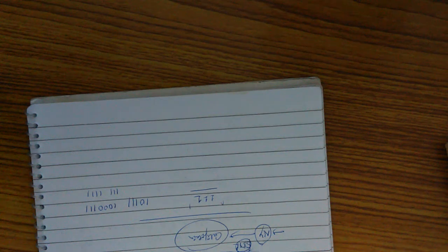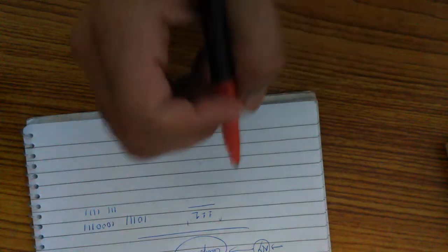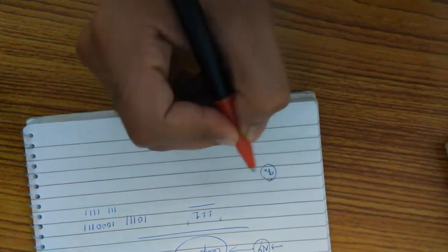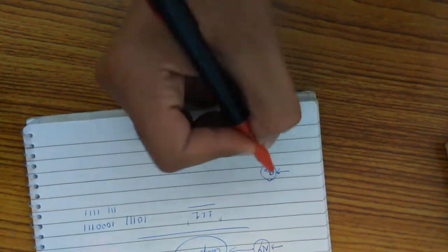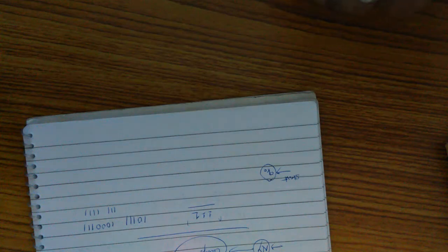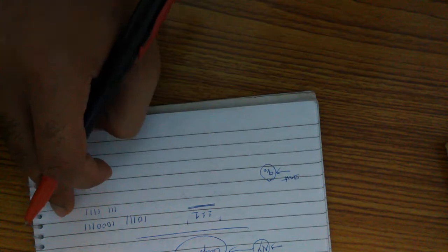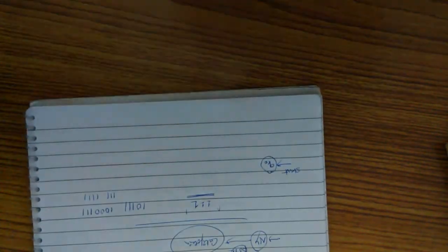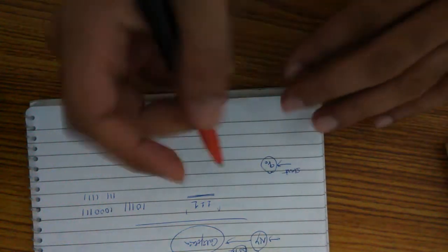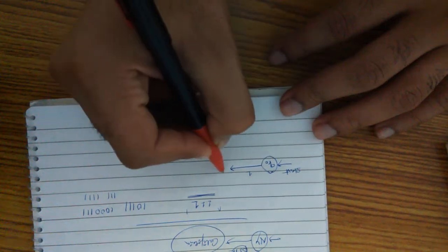So how are we going to write a transition diagram for this? It's very simple. Let us start. Let us consider state q0. This is our initial state, so this is the start state. Now let us design for the basic one. Let's not worry about all these strings, just design an automata for the basic string, that is 111.